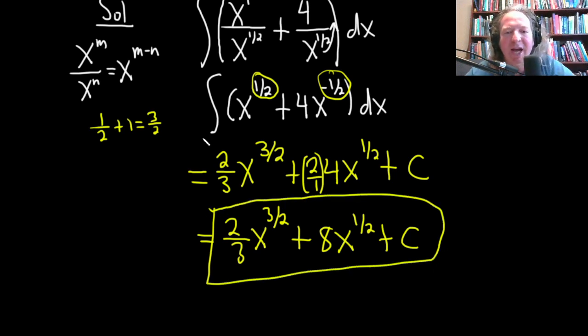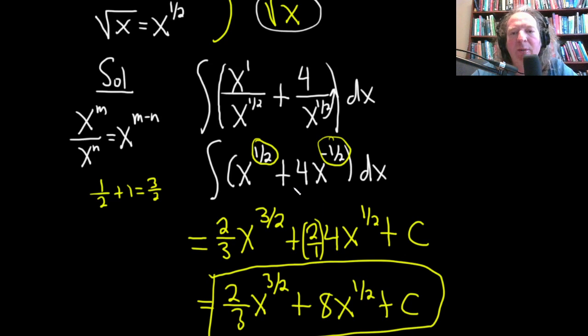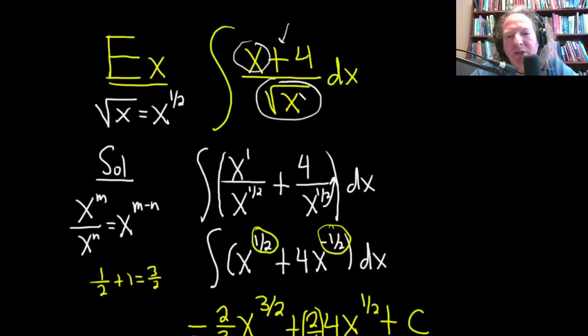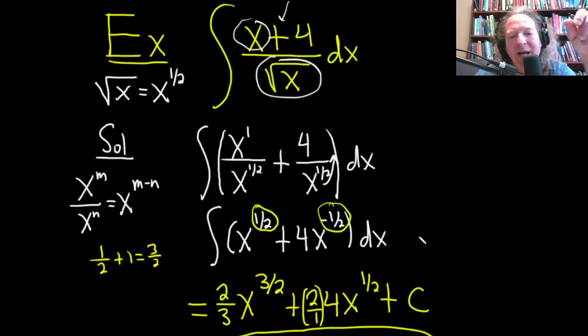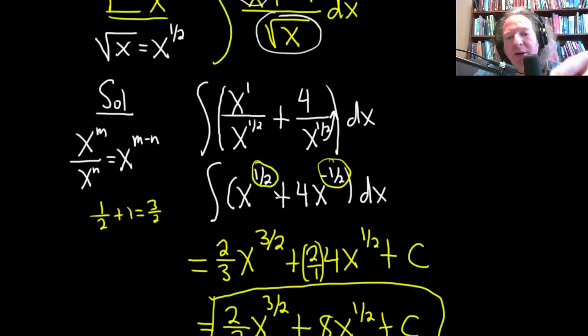So just a quick recap. When we first saw the problem, when you see a single term on the bottom like this, you should be thinking, hey, can I break this up? Yes, you can. So it's this over this plus this over this. Square root of x is really x to the 1 half. Here we did some algebra: 1 minus 1 half is 1 half. We brought this one upstairs and it became negative. At this point, everything is x to a power, so we can apply the power rule.